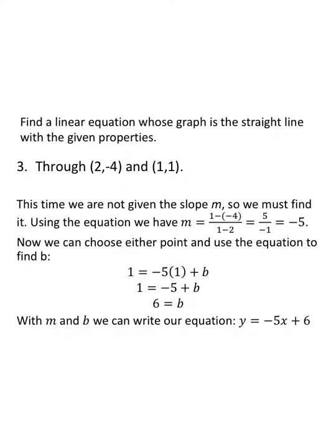What if we're not given the slope and only have two points? You always need a slope first, so use the slope formula. For points (2, 1) and (1, -4): one minus negative four over one minus two. That's five over negative one, which is negative five. Now choose one of the points — I'll use (1, 1). Substituting into y equals mx plus b: one equals negative five times one plus b. One equals negative five plus b; add five to both sides: b equals six. The equation is y equals negative five x plus six.